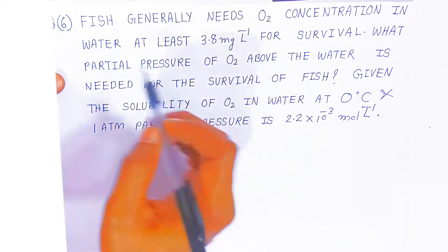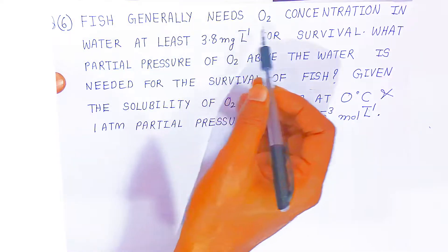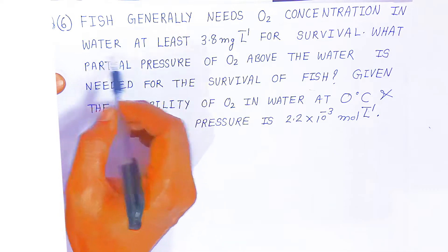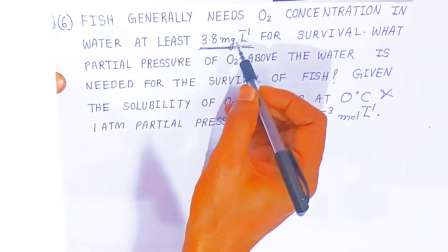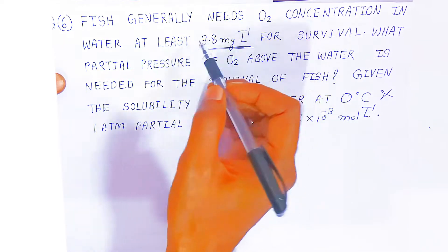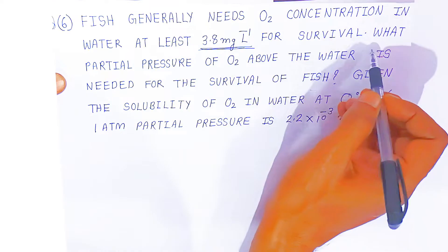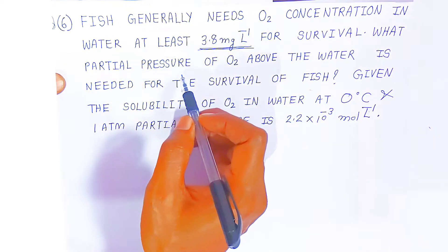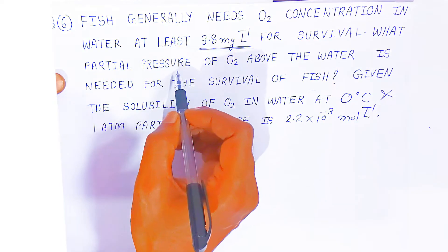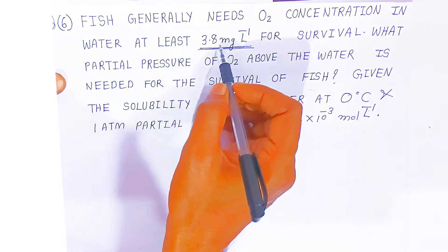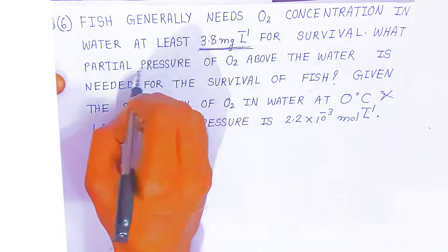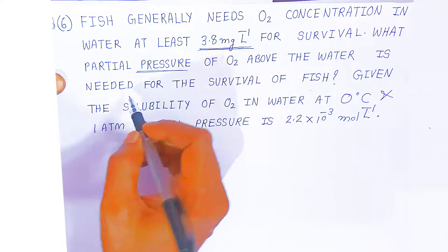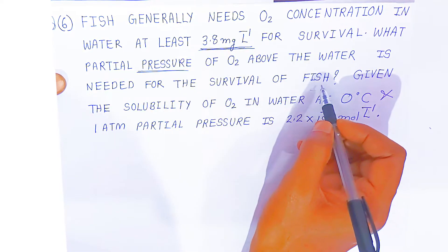In question 6, what is given? Fish generally need oxygen concentration in water at least 3.8 mg per litre — please pay attention, it is milligram per litre. The solubility of oxygen is given as 3.8 mg per litre for survival. What partial pressure of oxygen above the water is needed? You have to find out the partial pressure, that means the pressure of oxygen needed for the survival of fish.